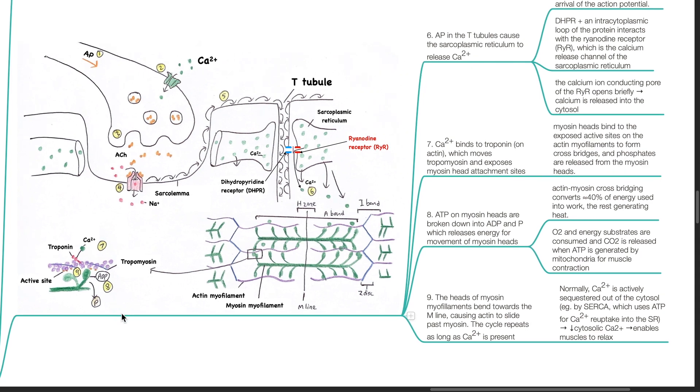Oxygen and energy substrates are consumed and carbon dioxide is released when ATP is generated by mitochondria for muscle contraction. The heads of myosin myofilaments bend towards the M-line causing actin to slide past myosin. The cycle repeats as long as calcium is present. Normally calcium is actively sequestered out of the cytosol, for example by SERCA which uses ATP for calcium reuptake back into the sarcoplasmic reticulum. This reduces cytosolic calcium and enables muscles to relax.